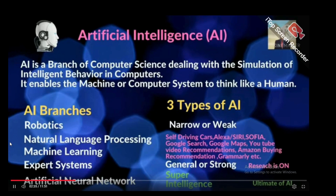There are three types of Artificial Intelligence. The first is Narrow or Weak AI. Examples include self-driving cars, Alexa, Siri, Sophia, Google Search, Google Maps, YouTube Video Recommendations, Amazon Buying Recommendations, and Grammarly.